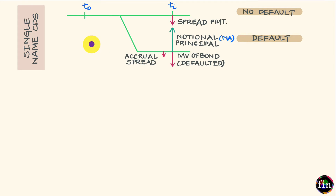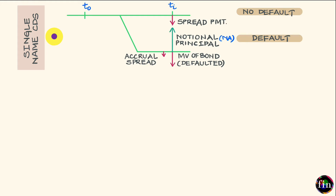Let us begin with a quick recap of the mechanics of a simple, single-name CDS. A CDS is a contract which can provide us with protection, or insurance, against the default of a chosen company. In the context of a CDS, this chosen company is referred to as the reference entity, and its default is referred to as the credit event.